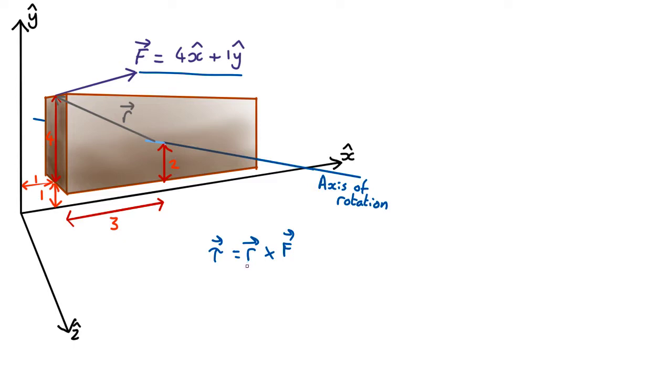Now the displacement vector is the vector from the axis to the force. Now where on the axis? It's from the nearest point on the axis, which in this case is going to be here, not say here or somewhere else like that. So what's the vector from there to there?